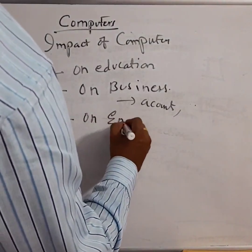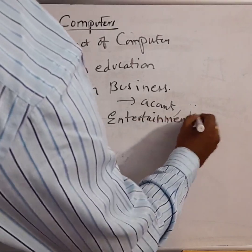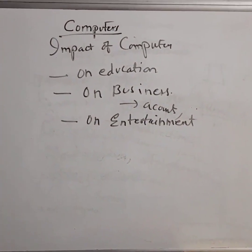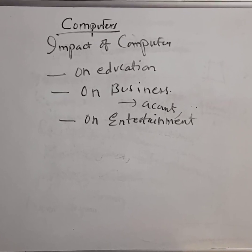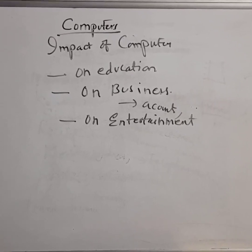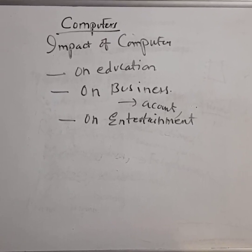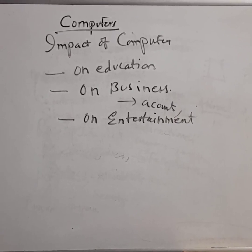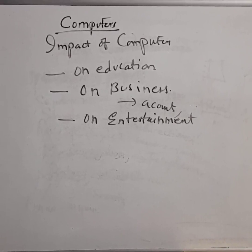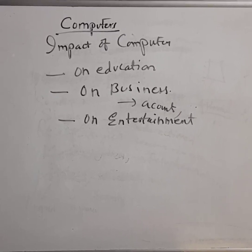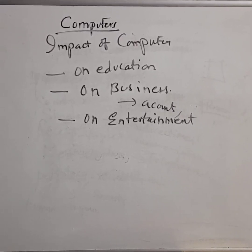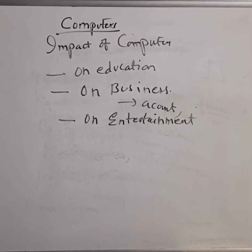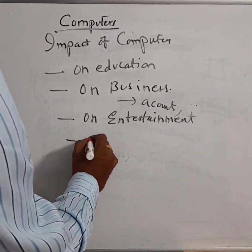Another area computers have impacted is entertainment. Most people who enjoy science fiction or action movies find that those graphics were mostly made by computers. Computer graphics are used to make things more realistic — mostly for spaceships, aliens, monsters, and special effects. Movies like Jurassic Park, Wing Commander, and Starship Troopers used computers to look more interesting and realistic. There are even movies completely made by computers, and new 3D games were made with cool computer graphics.